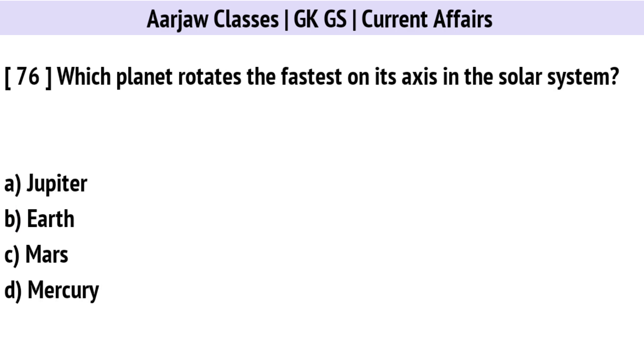Which planet rotates the fastest on its axis in the solar system? Correct option is A: Jupiter.